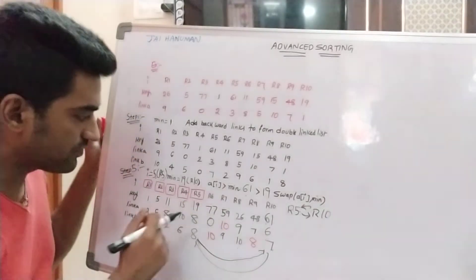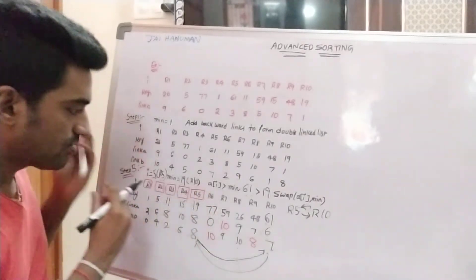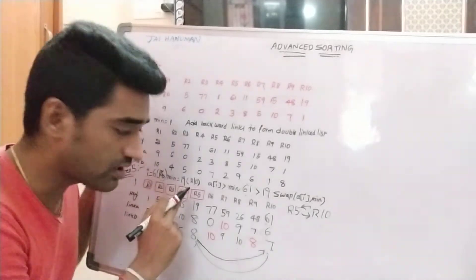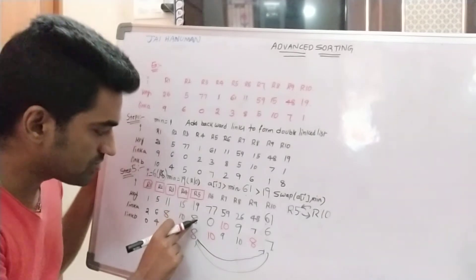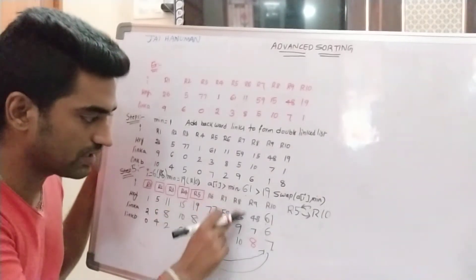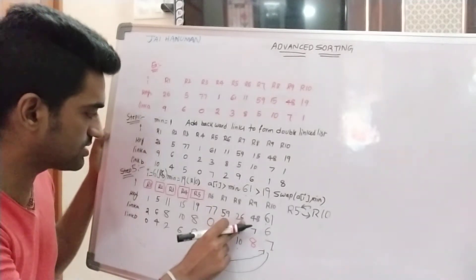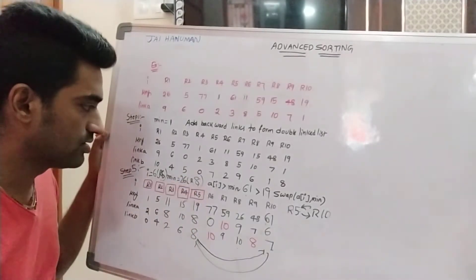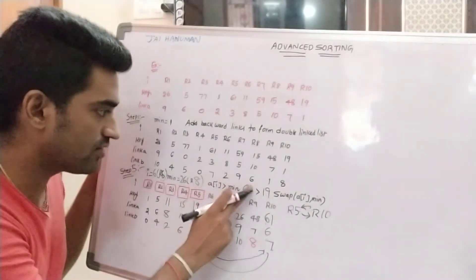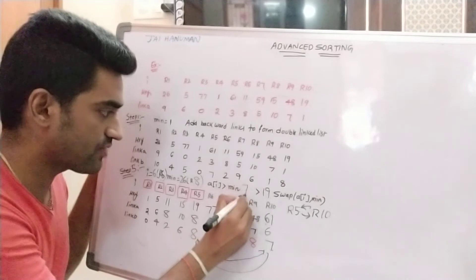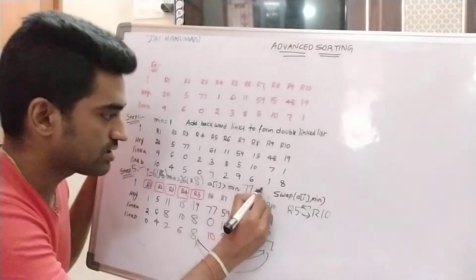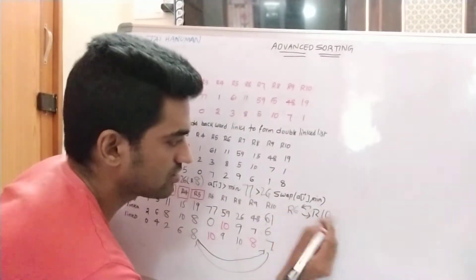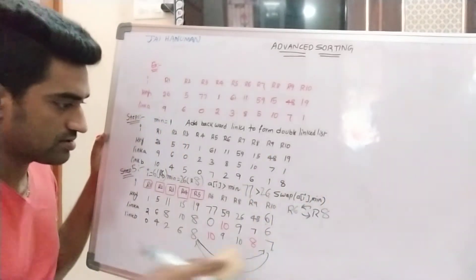After completion of this iteration, I value is incremented by 1 — now I value is 6, that is R6. We find the minimum value using the previously sorted record R5's link A, which is 8 — go to R8. Minimum value is 26 (R8 record). Checking condition: A[6]=77 greater than 26 — condition is true. We are swapping R6 and R8.